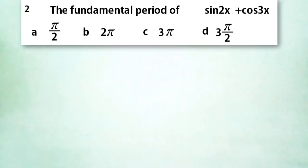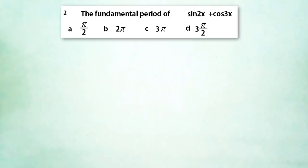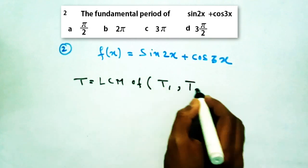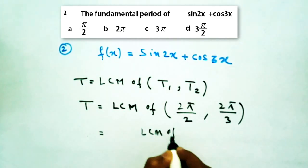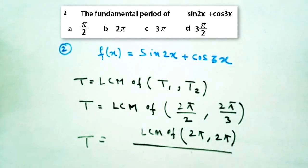In this question, we have to find the period of 2 functions added together, i.e., sin 2x and cos 3x. In this type of questions, we have to take the LCM of individual periods. So the period of this function will be LCM of 2π/2 and 2π/3, which is 2π.